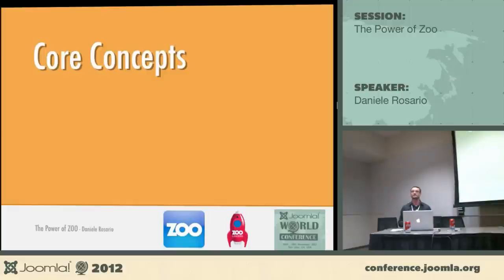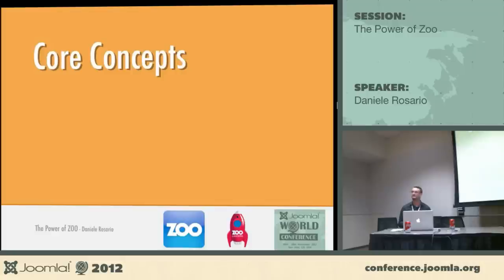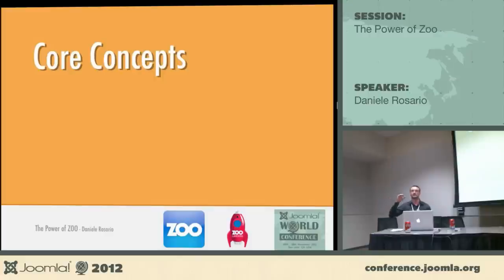Zoo has a few core concepts. Who has already used Zoo at least once? Who has used another CCK, like K2, JCE blog, or FlexiContent? Zoo is quite a bit different from K2. K2 is like an extended version of content, so you can add things to a content page. Zoo is a more pure CCK, more similar to the UCM concept — you build your content with various fields.